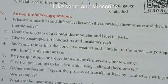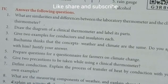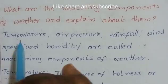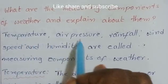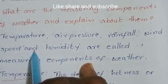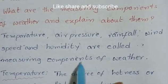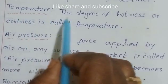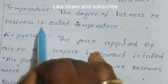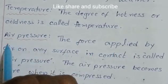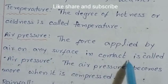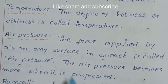Eighth question: what are the measuring components of weather? Temperature, air pressure, rainfall, wind speed, and humidity are the measuring components of weather. Temperature is the degree of hotness or coldness. Air pressure is the force applied by air on any surface in contact. The air pressure becomes more when it is compressed.